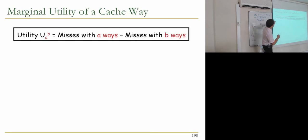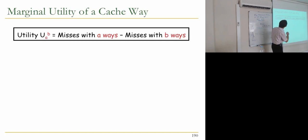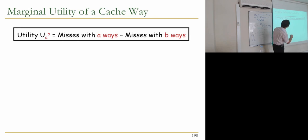What is the marginal utility of a cache way? A way is an entire way of a cache. We define utility as misses with A ways minus misses with B ways, where A is greater than B. We're going to look at utility curves.